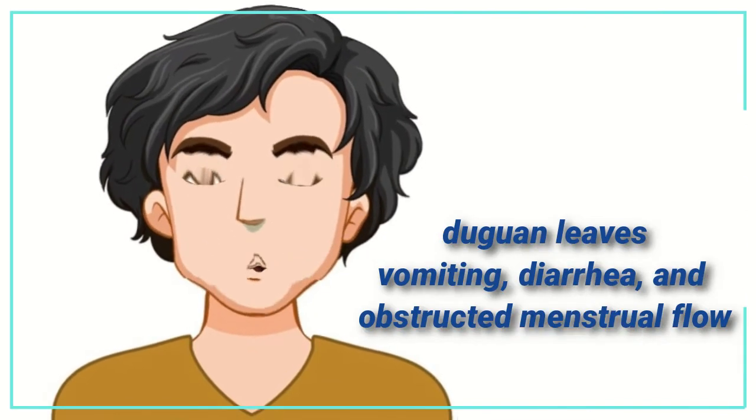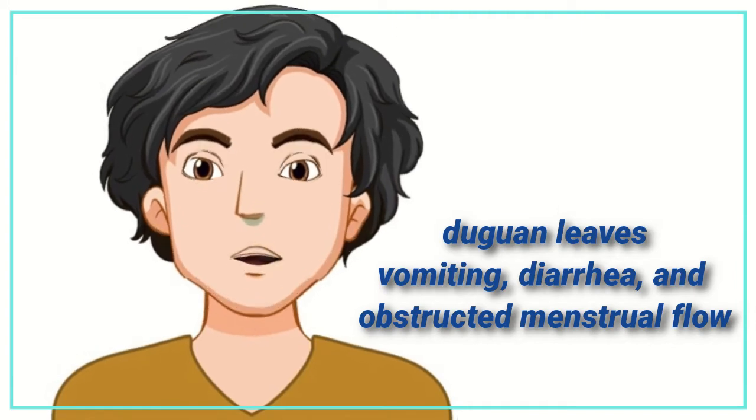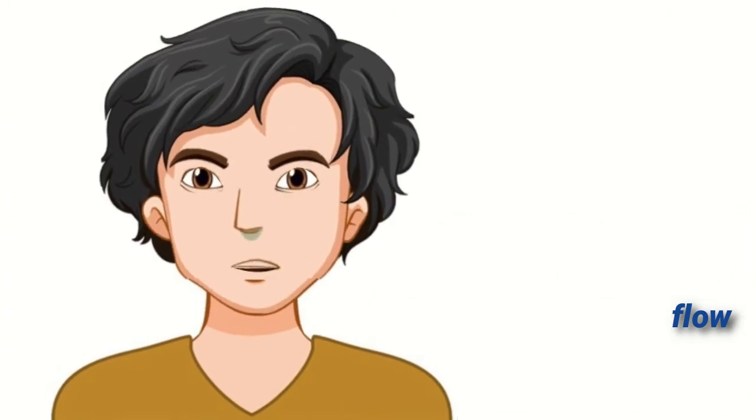Tiguan leaves are used to cure vomiting, diarrhea, and obstructed menstrual flow. Hawwili leaves are used to cure headache.